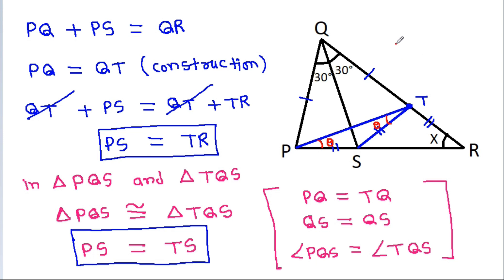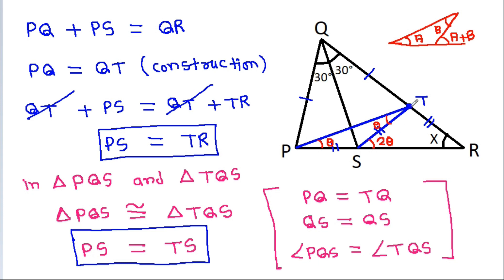And in any triangle, if this angle is a and this angle is b, then the exterior angle is a plus b. So this angle will be theta plus theta, that is 2 theta. And since ts is equal to tr, that means x will be 2 theta.